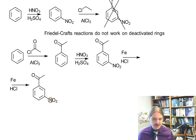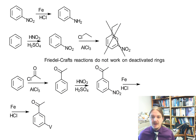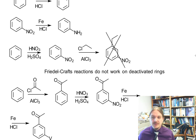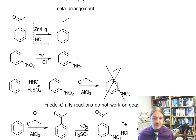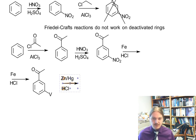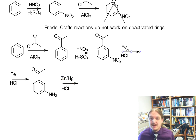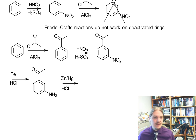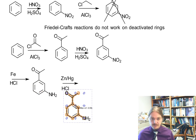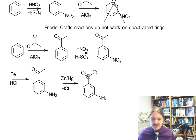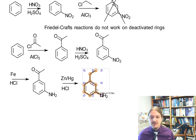Reduce the nitro group to the amine. And then we're going to reduce the ketone — reduce the ketone to the ethyl group. It turns out to require four steps to do that, which isn't too bad.